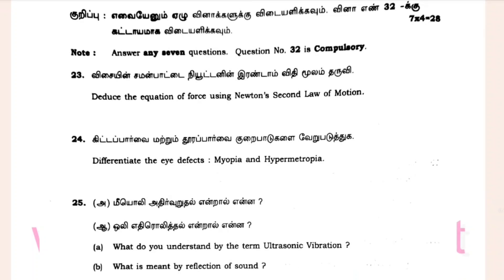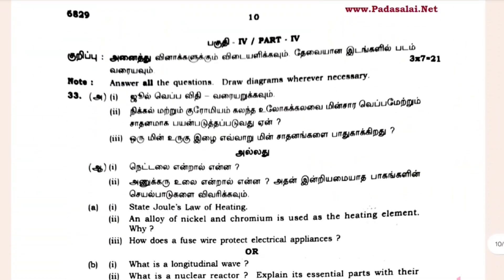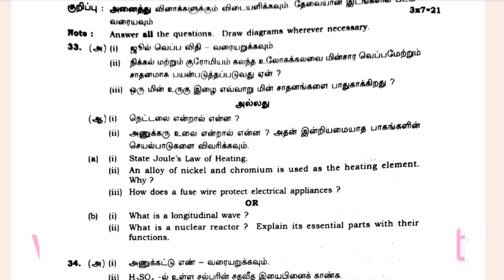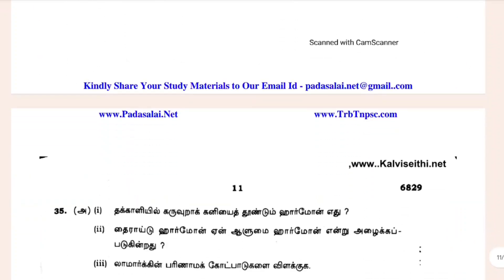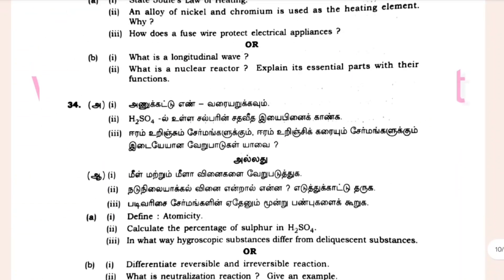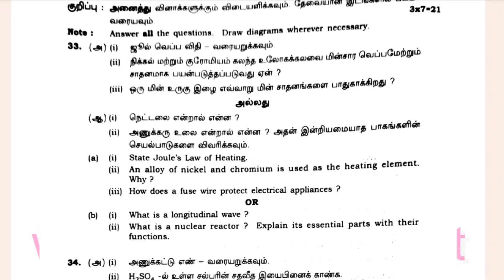Differentiate the eye defects myopia and hypermetropia — first one is physics. Derive the equations of force using Newton's second law of motion — physics, 4 marks. 7 marks. Biology, physics — physics 7 marks. What is question 44? An alloy of nickel-chromium is used as a heating element, I think. Physics or chemistry — we have to answer this question. Each order will confirm the chemistry.